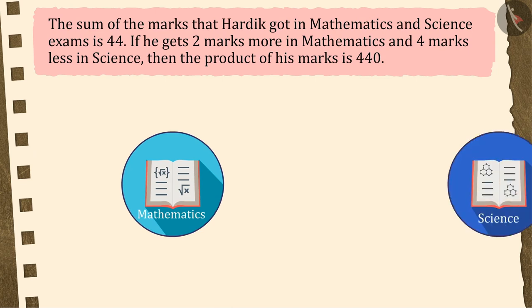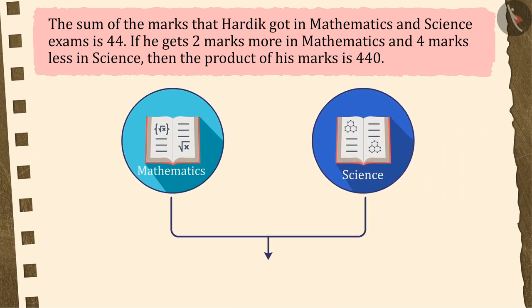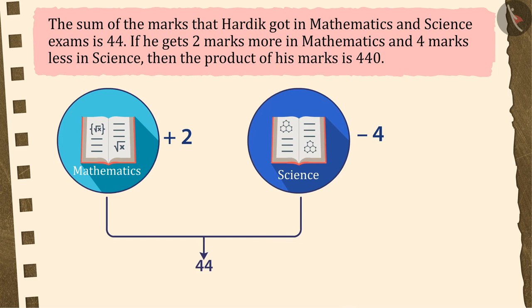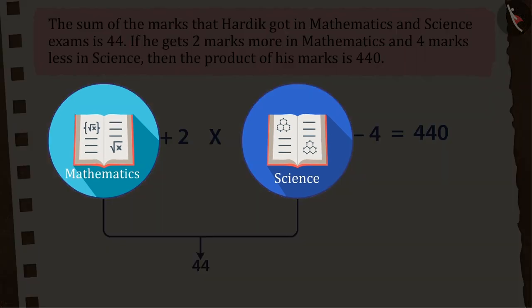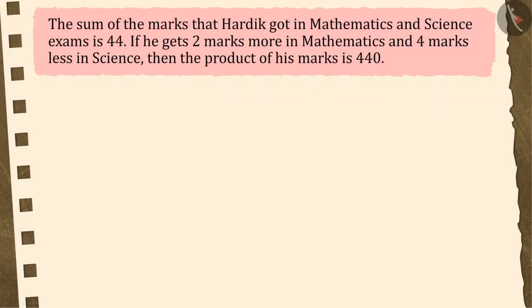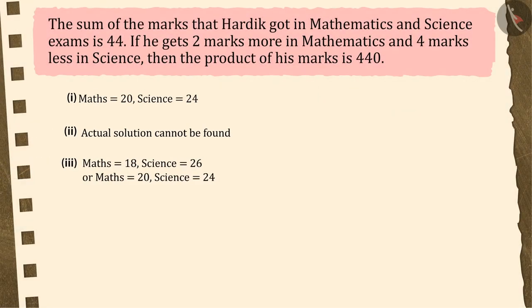The sum of the marks that Hardik got in mathematics and science exams is 44. If he gets 2 marks more in mathematics and 4 marks less in science, then the product of his marks is 440. Can you find out marks he got in each subject? Pause the video to solve this question and then check your answer.